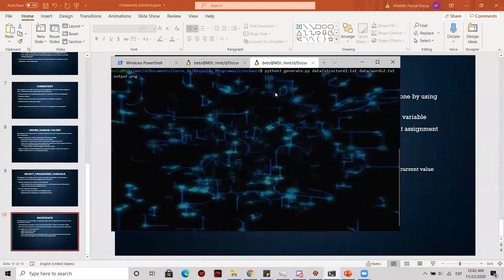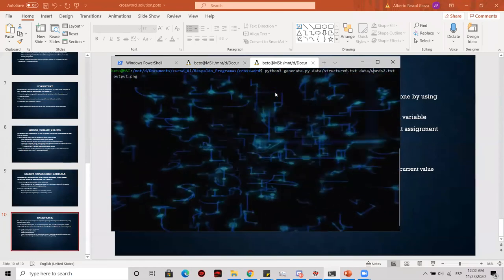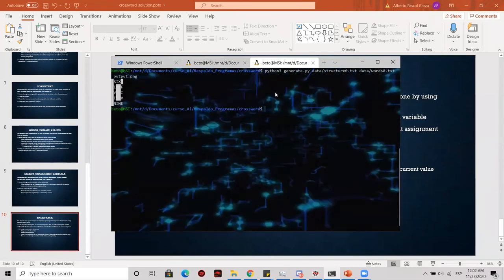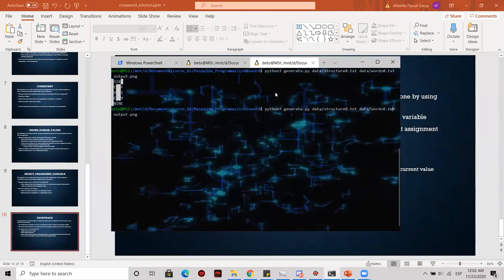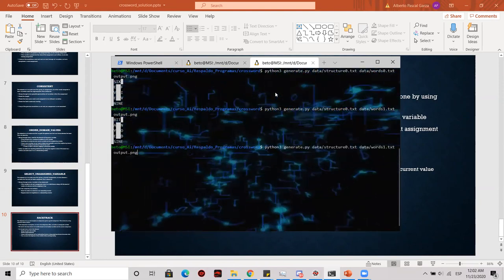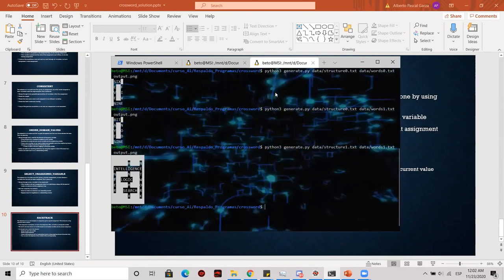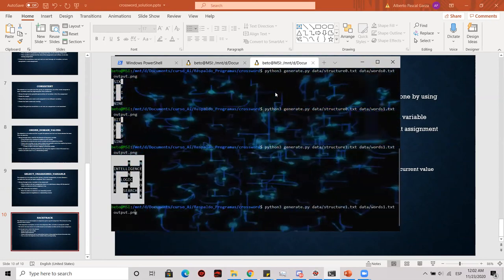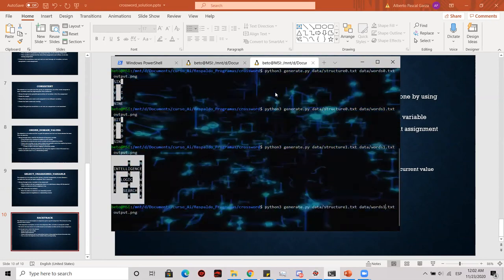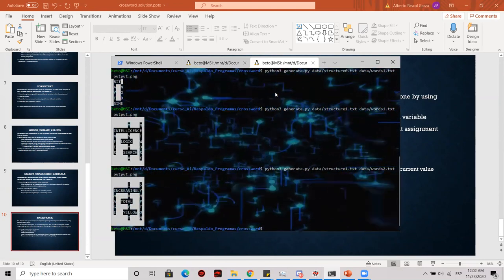Here we have the first set of data. We can use structure 0 with words 0, and there's a result. We can also combine it with a different word set, such as words 1, and there's a different result. We can check a different structure using word set 1 and get this different result. We can also use the biggest word set, which is words 2 with structure 1. There's a result.